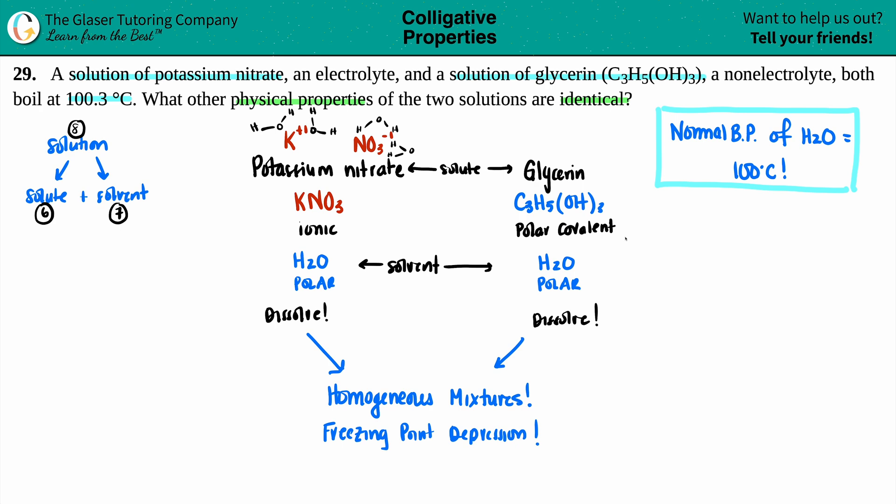So it will never, never, never decrease it. It can only go higher. The freezing point will get lowered. The freezing point will never be able to go higher. Okay. So they both are homogeneous mixtures. That's identical. Their freezing point depressions will also be identical. So they'll go a little bit lower, and just know that the normal freezing point of H2O is zero degrees Celsius.